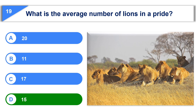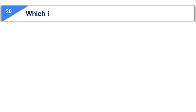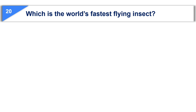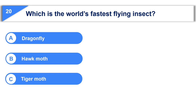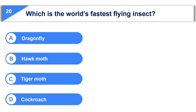Now let us see the last question. Which is the world's fastest flying insect? Option A, dragonfly. Option B, hawk moth. Option C, tiger moth. Option D, cockroach.